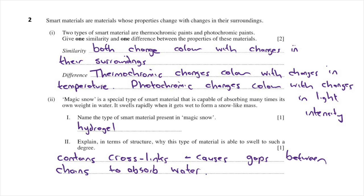The second part of this question says magic snow is a special type of smart material that is capable of absorbing many times its own weight in water, and it swells rapidly when it gets wet to form a snow-like mass. Name the type of smart material present in magic snow. That would be a hydrogel — one mark if you said that. Then it says explain in terms of structure why this type of material is able to swell to such a degree.